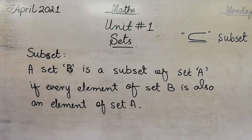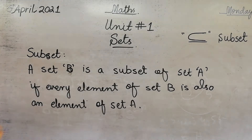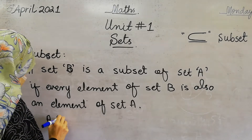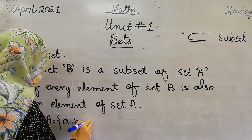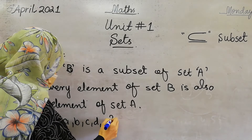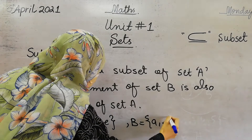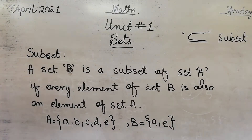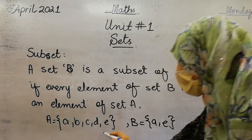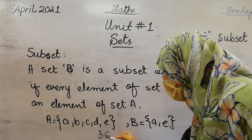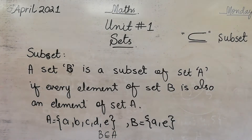Every element of set B is also in set A. For example, if A is {A, B, C, D, E} and B is {A, E}, then B is a subset of set A. This shows that B is a subset of set A.